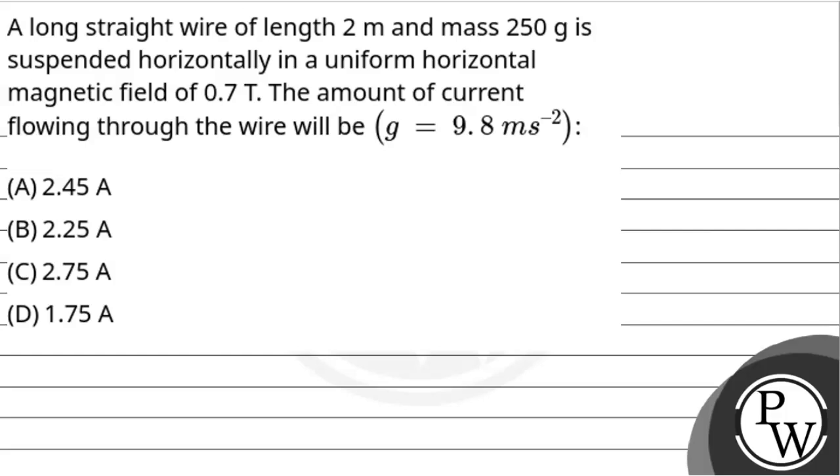Hello Achoo, let's hear out the questions. The question is: a long straight wire of length 2 meter and mass 250 gram is suspended horizontally in uniform horizontal magnetic field of 0.7 tesla.